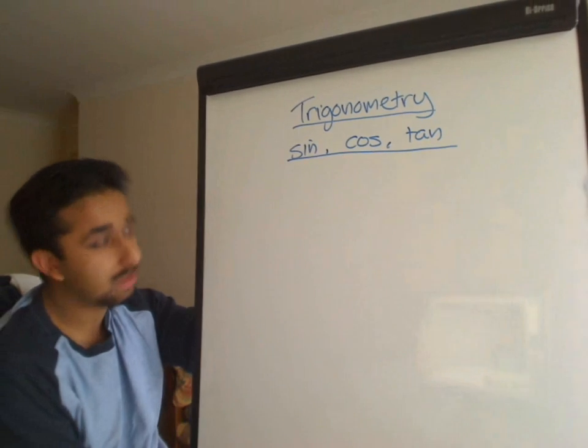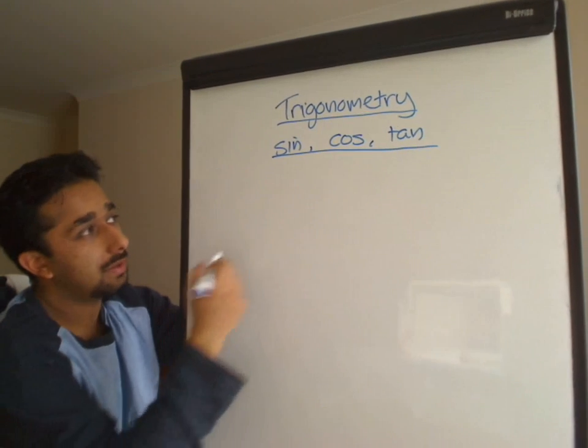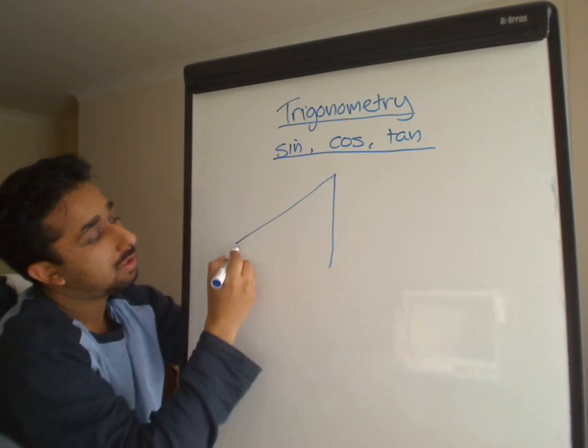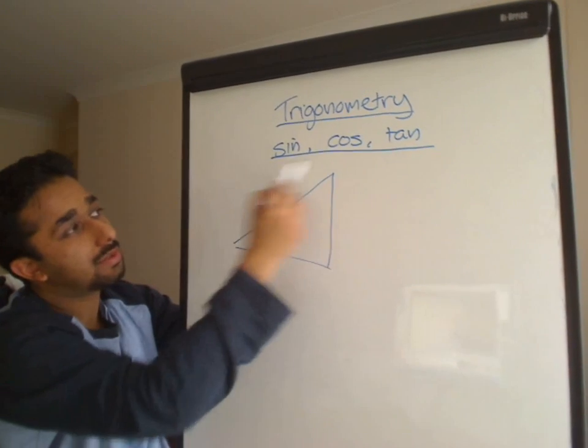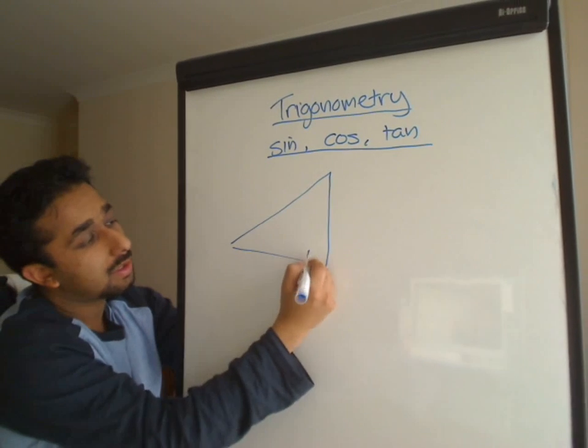We're going to do a quick video on actually using or solving the length of a side using trigonometry. Trigonometry is about these three buttons: sine, cos, tan on your calculator. Here we go.